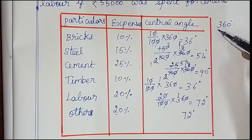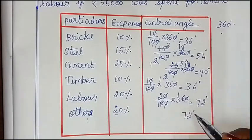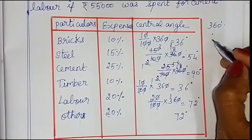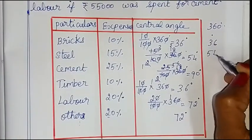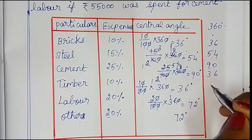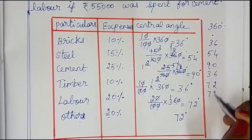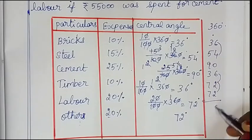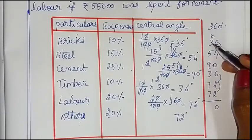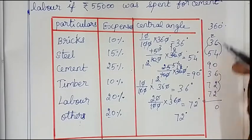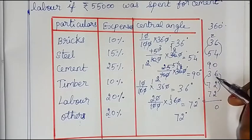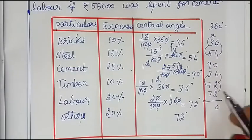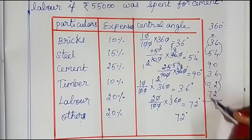The total should be 360 degrees. Let's check: we add 36, 54, 90, 36, 72. 6 plus 4 is 10, 6 plus 4 is 10 — carry over. 5 plus 5 is 10, 7 plus 3 is 10. So the total is 360 degrees. The denominator is correct — all central angles sum to 360 degrees.